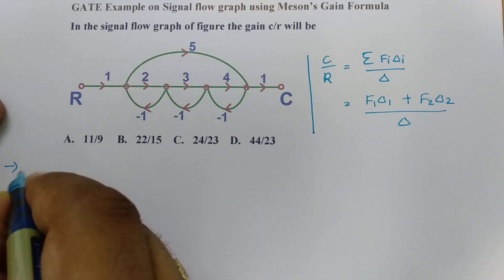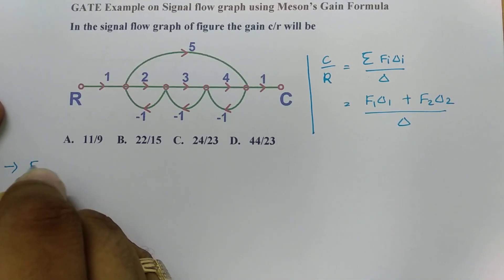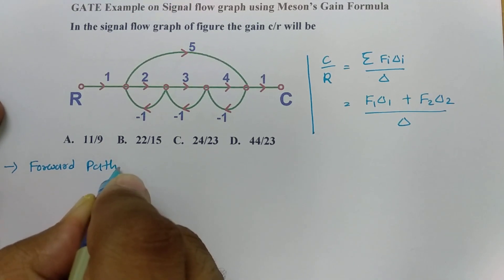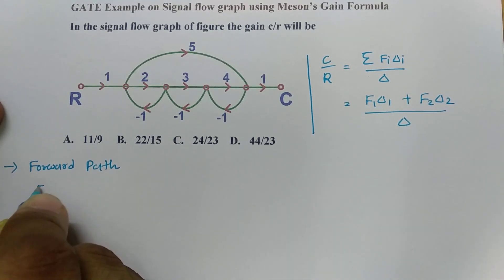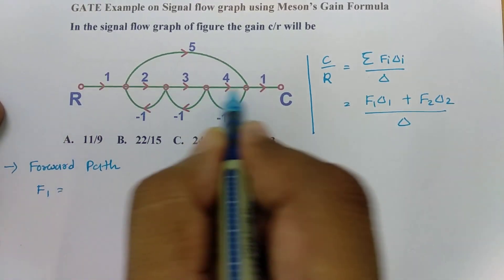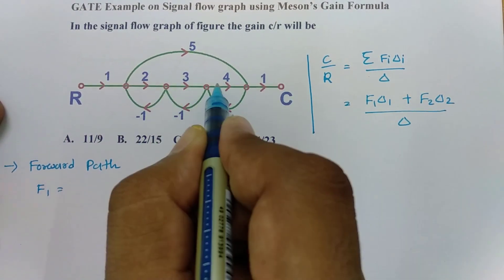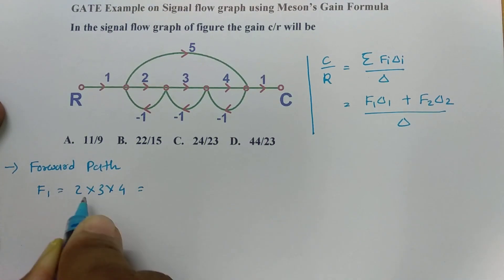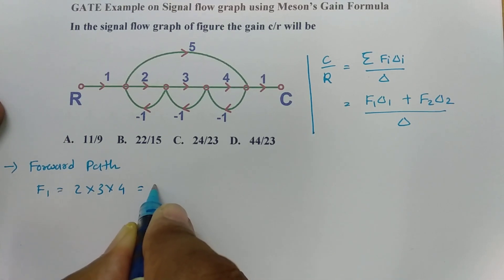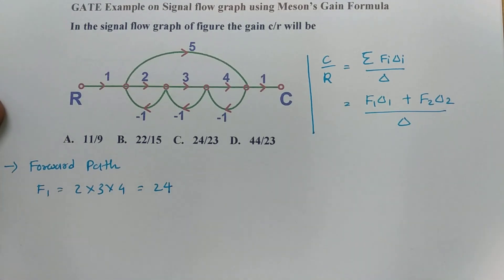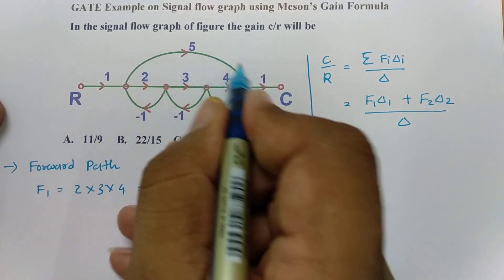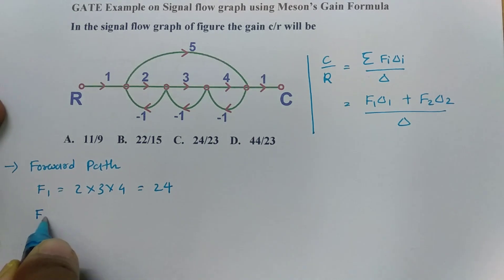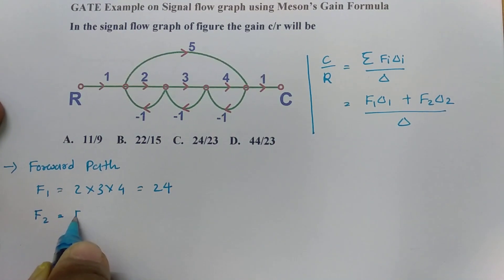First, we need to consider the forward paths. We have two forward paths. The first forward path, F1, is 2 into 3 into 4 into 1, which gives 2 into 3 into 4 equals 6 into 4, so F1 equals 24. The second forward path, F2, is 5.